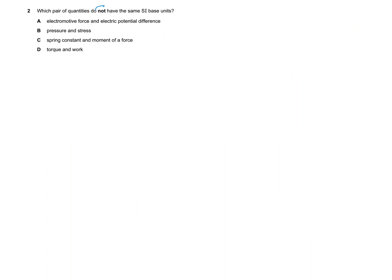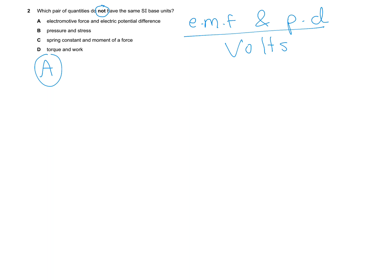We're asked which pair of quantities do not have the same SI base units. We need to try each choice separately. Starting with choice A, just by looking we can tell that both quantities have the same SI base units, because electromotive force (EMF) and potential difference (PD) are both measured in volts.